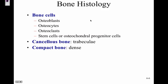The bone cells are osteoblasts, osteocytes, and osteoclasts. The stem cells are osteochondral progenitor cells, which are the cells that develop into those three bone cell types.